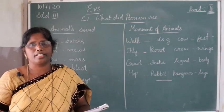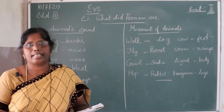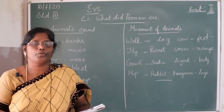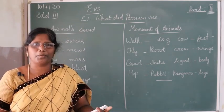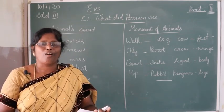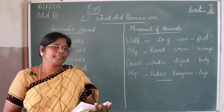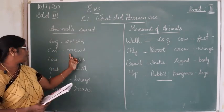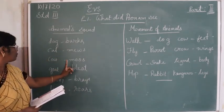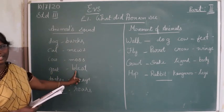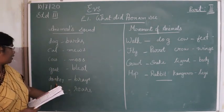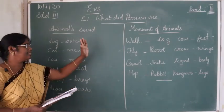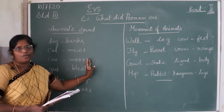Animals produce different kinds of sounds. You know what kind of sound a dog produces? A dog produces 'bhao bhao' — we call it barking. A dog barks. A cat meows. A cow moos. A goat bleats. A donkey brays. And the lion roars. So these are the different sounds of animals.